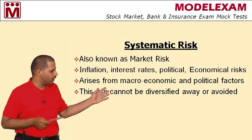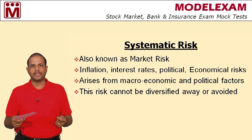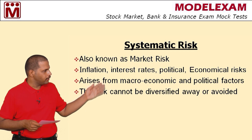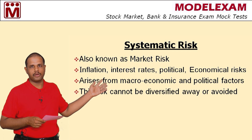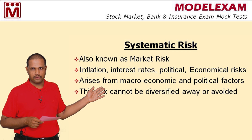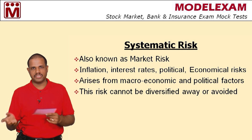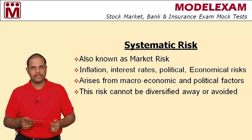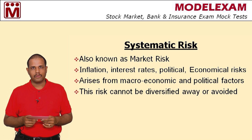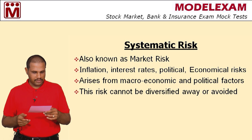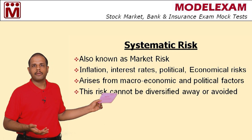Systematic risk is also known as market risk. There are certain things which are beyond the control of an investor — like movement in interest rates, political scenario, economical scenario, or any change in GDP figures. These changes or happenings are not in the control of anybody. Whenever such an event happens, it will affect the market, which will in turn affect your mutual fund performance. This kind of risk is known as systematic risk — the risk which arises from macroeconomic and political factors.